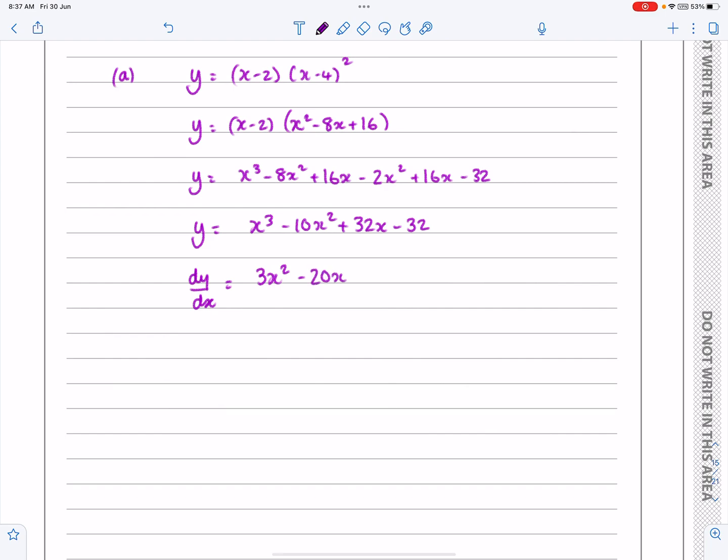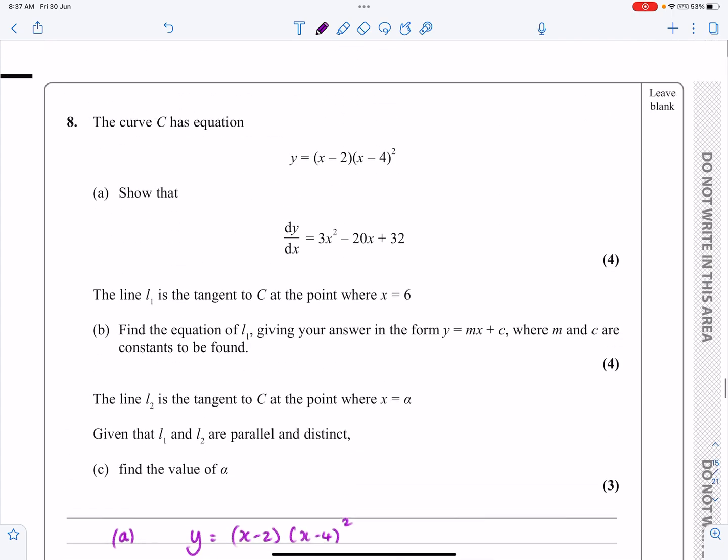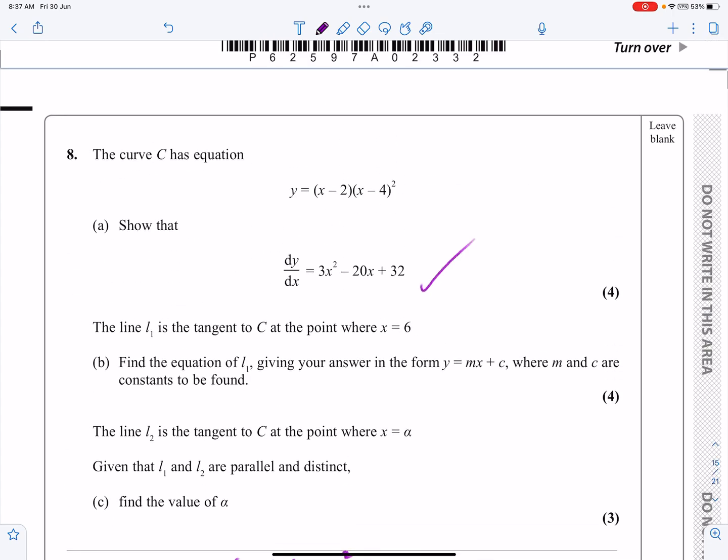Multiply by the power, take one off the power. By the time we get down to x's, they just become the constant, and any constants just disappear. So 3x squared minus 20x plus 32, and I think we were asked to show that.